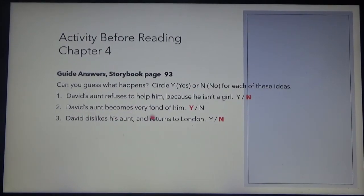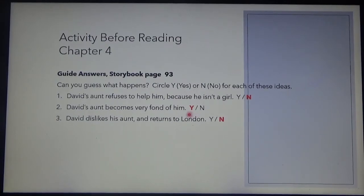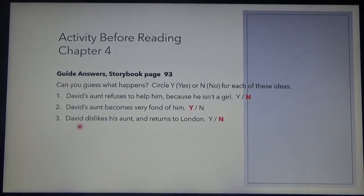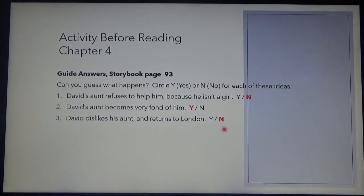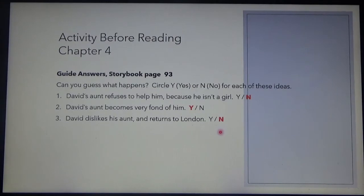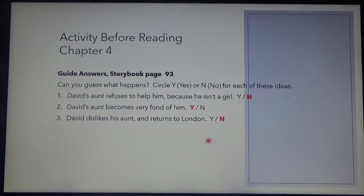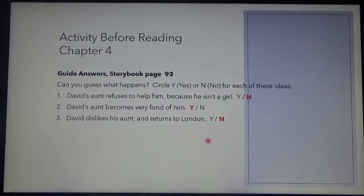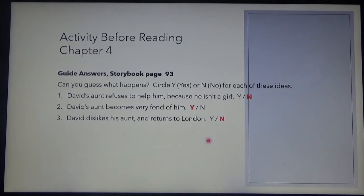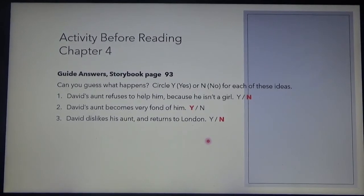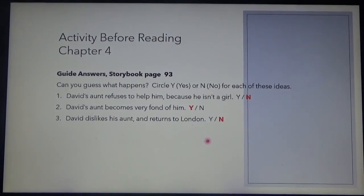David's aunt becomes very fond of him. Here we have our guide answer — it's a yes, and that is for us to see. David dislikes his aunt and returns to London. Again, with this sentence, we shall see what happens. You were assigned to read chapter 4 after we ended the video presentation for chapter 3. But this time, have a quick look, revise chapter 4, and I shall be giving you a few minutes to do so.